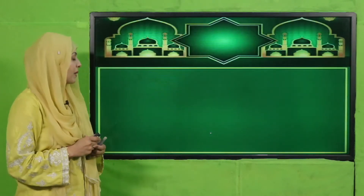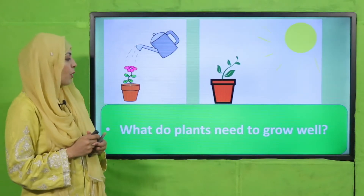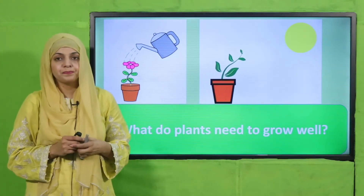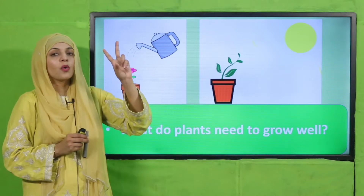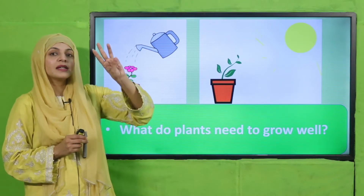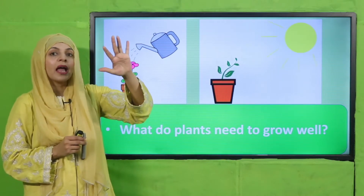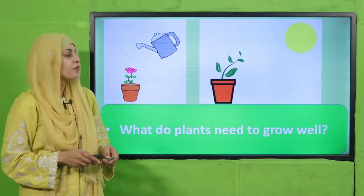So quickly tell me: what do plants need to grow well? They need air, water, sunlight, soil and temperature to grow well.